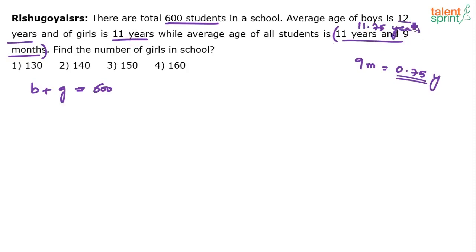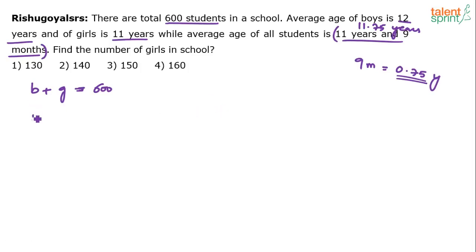So 11 years and 9 months is treated as 11.75 years. For boys the average age is 12 years, for girls it is 11 years, and for the whole class it is 11.75 years. Total age of boys plus total age of girls equals total age of the entire class. With b boys at average age 12, total age of boys is 12b. With g girls at average age 11, total age of girls is 11g.